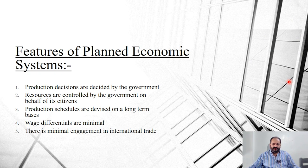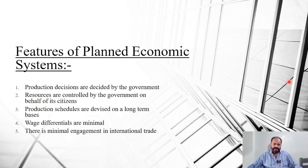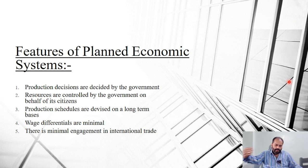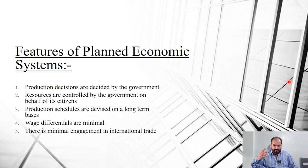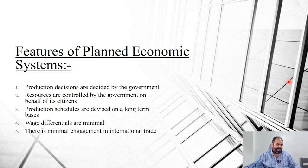What are the key features of planned economy? Number one: all decisions in the economy are taken by the government. All resources are controlled by the government and allocated to citizens on behalf of the government. Companies are owned by the government, so if you work in such a firm, you are essentially a government employee and your pay is given by the government.